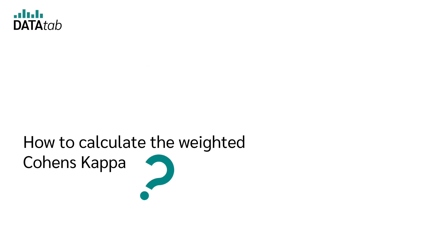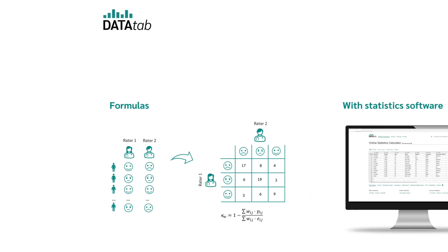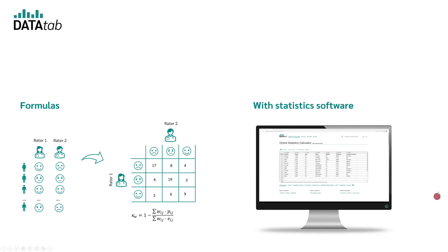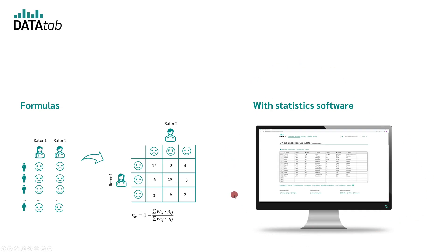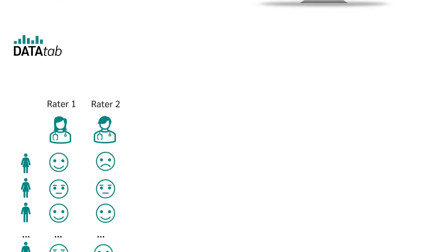How is Cohen's kappa calculated? The answer is quite simple. You can either use Datatab and calculate the weighted kappa online, or you can calculate it by hand. We will now go through both ways. First, I'll show you which formulas you need for the weighted Cohen's kappa and we'll go through them with an example. Then I will show you how you can easily calculate the weighted Cohen's kappa online with Datatab.